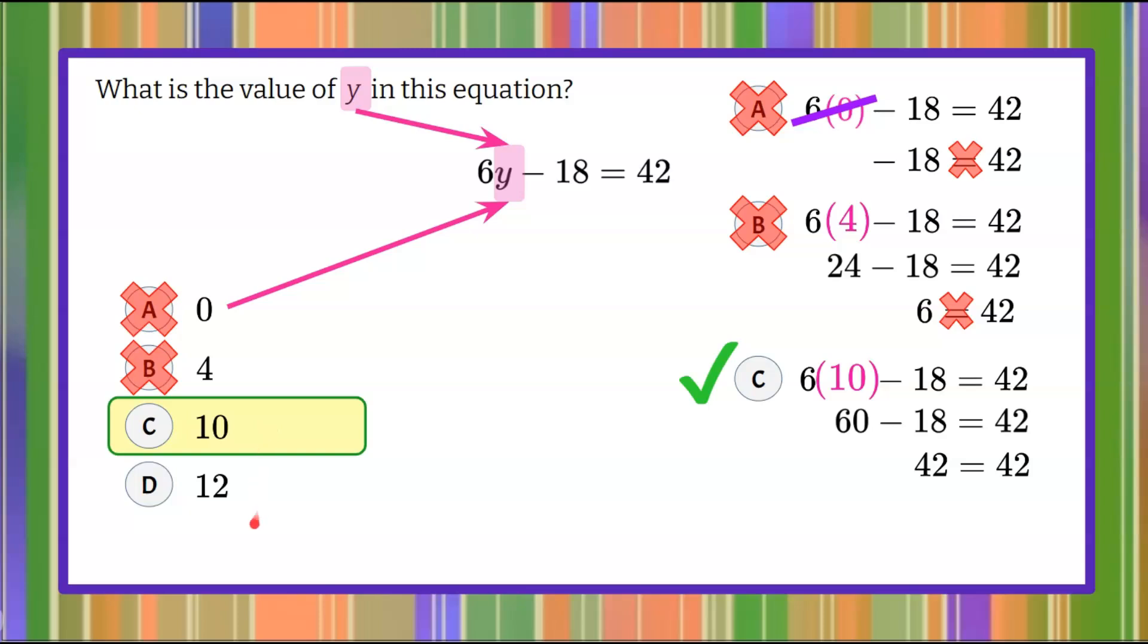Now let's consider choice d. If I showed this work, it would be 6 multiplied by 12, which is greater than 60, which would give me a difference greater than 42. So it would not be equivalent. Therefore, we can also rule out answer choice d.